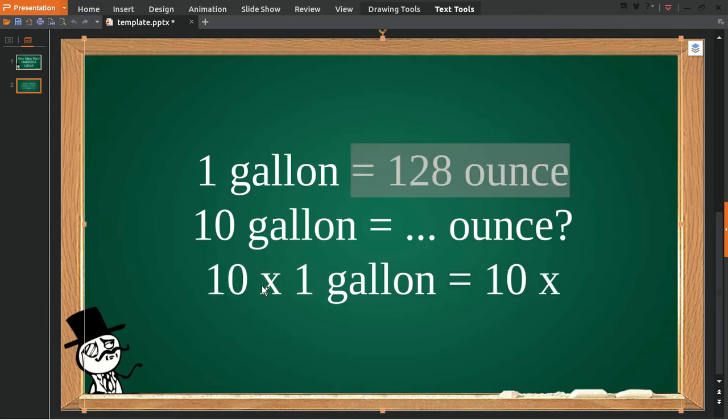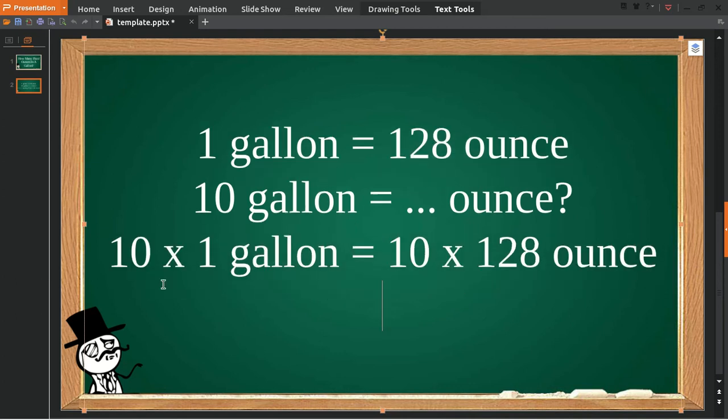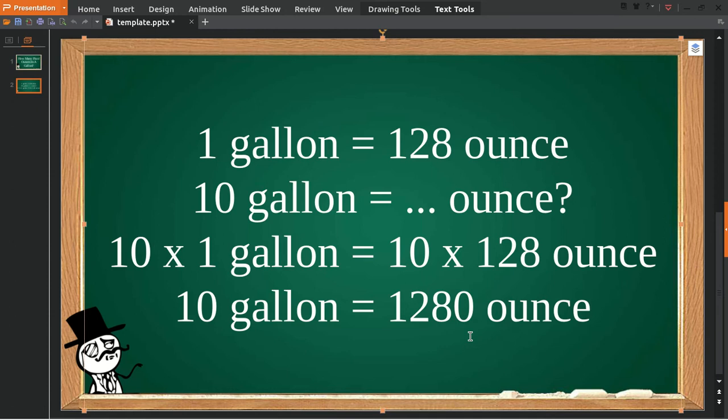And then you multiply it with this number, 128 ounces. Now 10 multiplied by 1 is equal to 10 gallons, and it's equal to 1,280 ounces. Okay, I think that's the end of the answer.